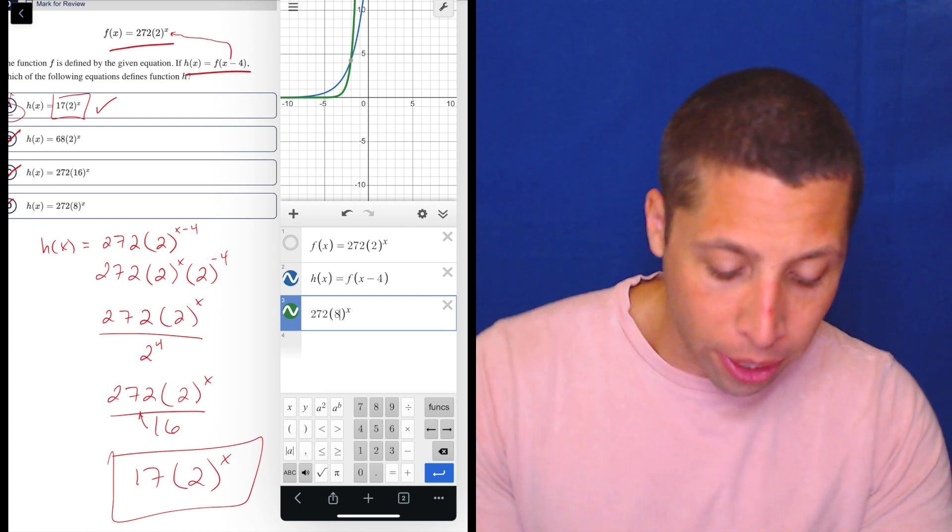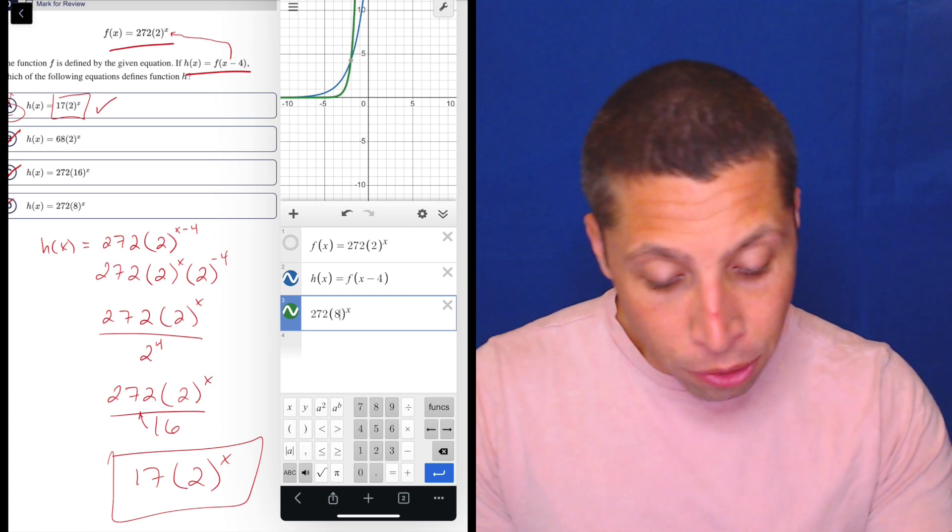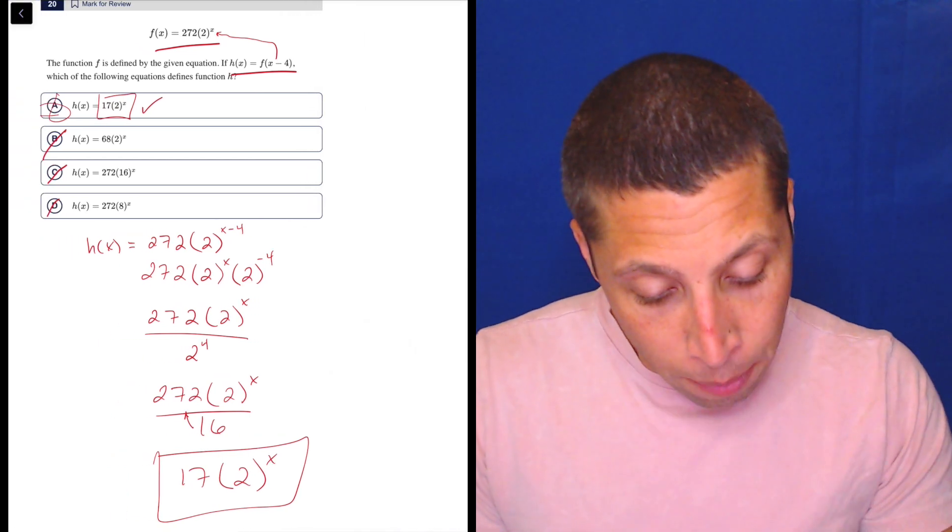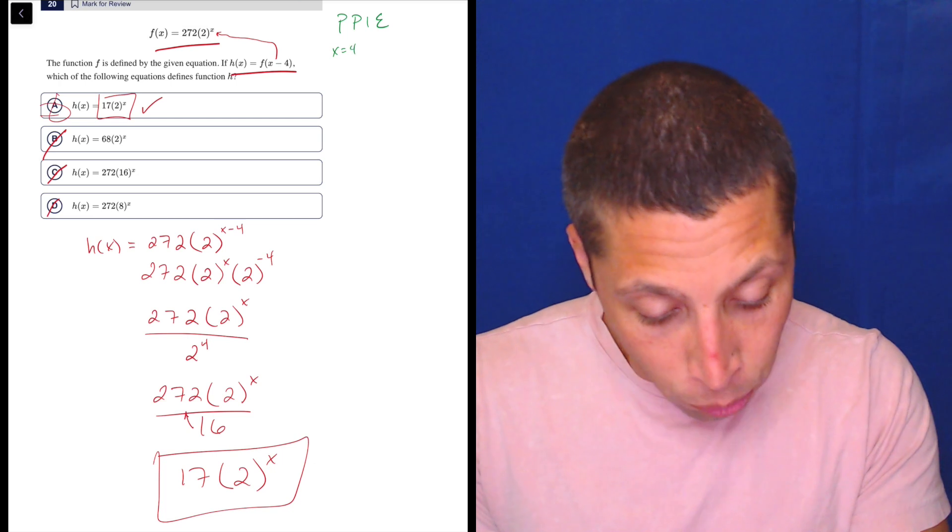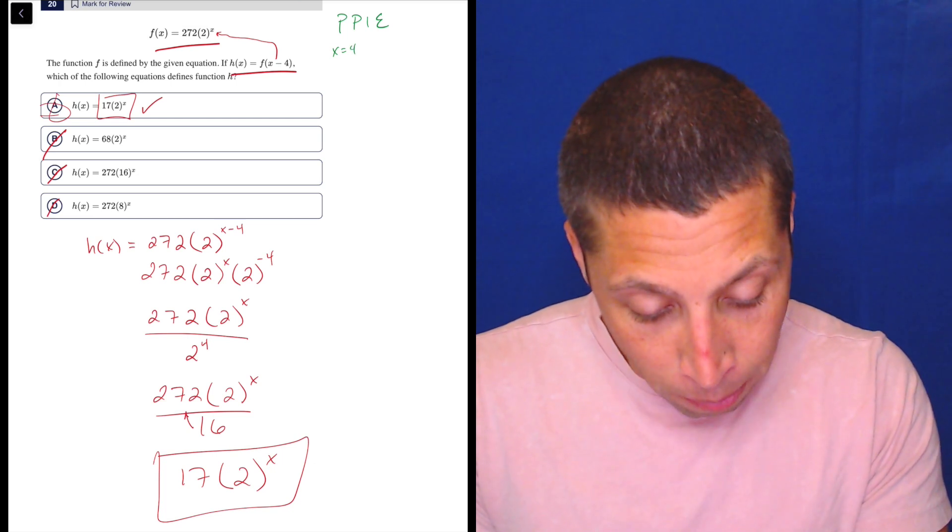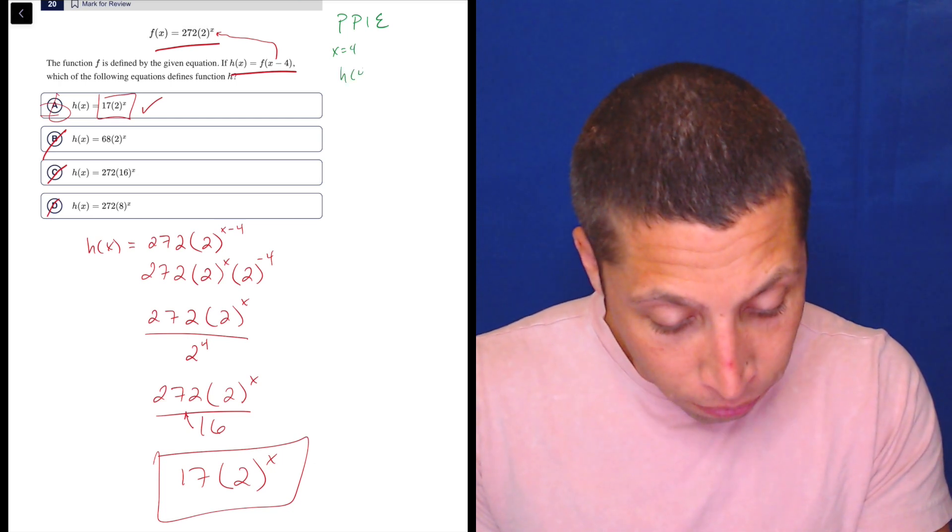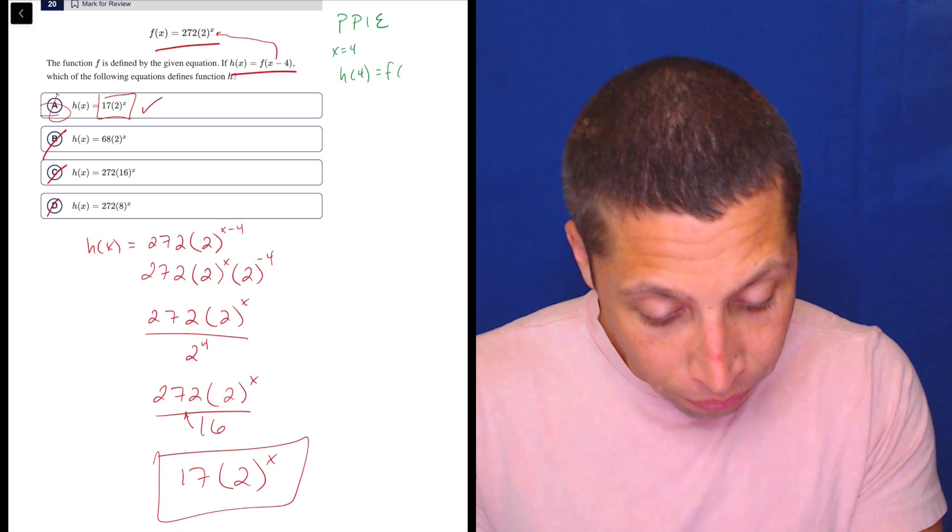The only other way I could think to do it is maybe there's a way... Let's just do it for the sake of learning new things. Maybe there's a way to plug points into equations. If I said x is equal to 4, then that means I'm looking for h of 4 is going to be the same as f of 0,